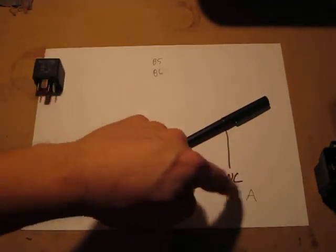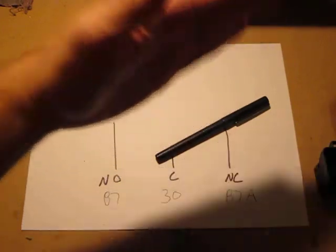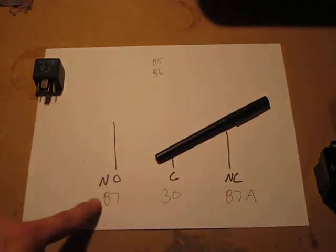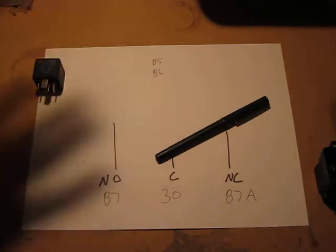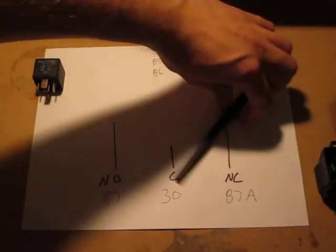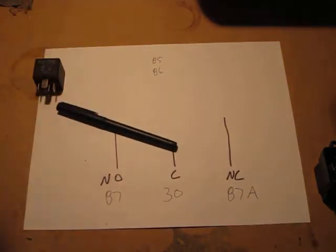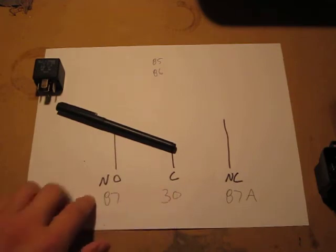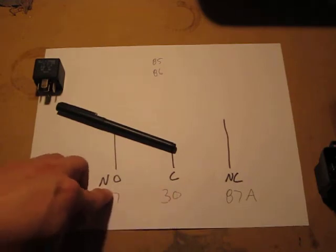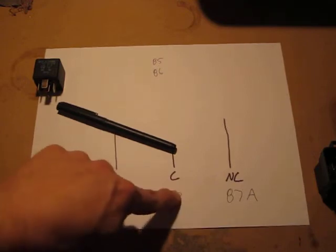So, normally closed, when the switch is in this position, these two are connected. NO stands for normally open, meaning it's not connected to anything. When you flip the switch, or you energize the relay, you now have connected what is normally open, but since it's energized, it's closed, to your common. Now, this side is open.